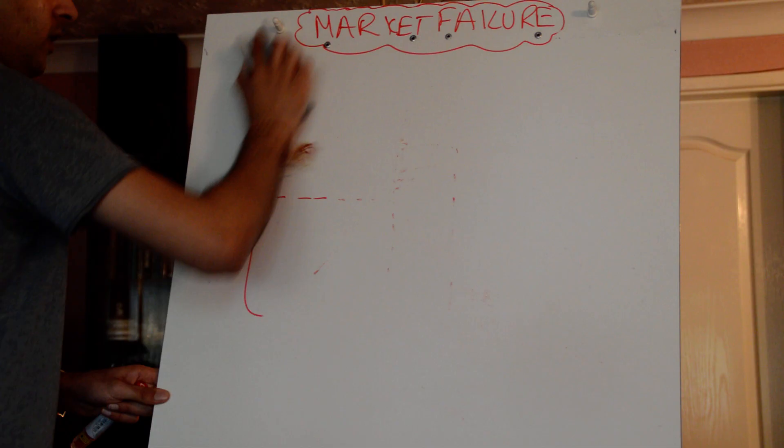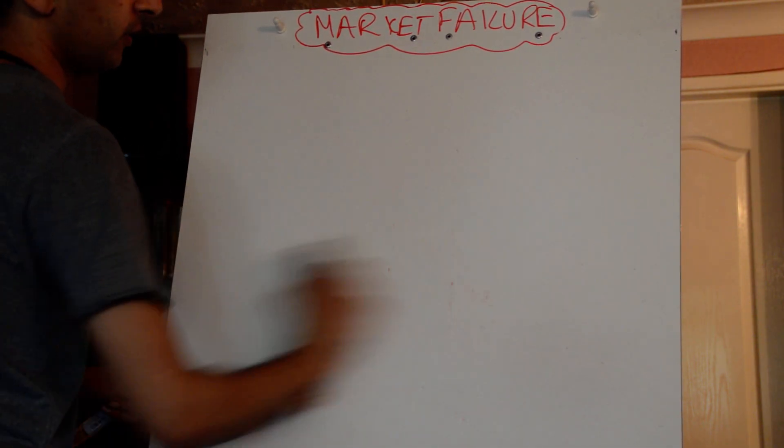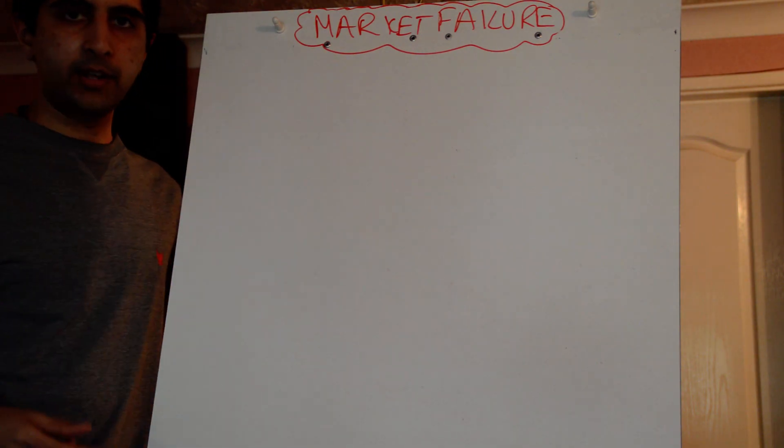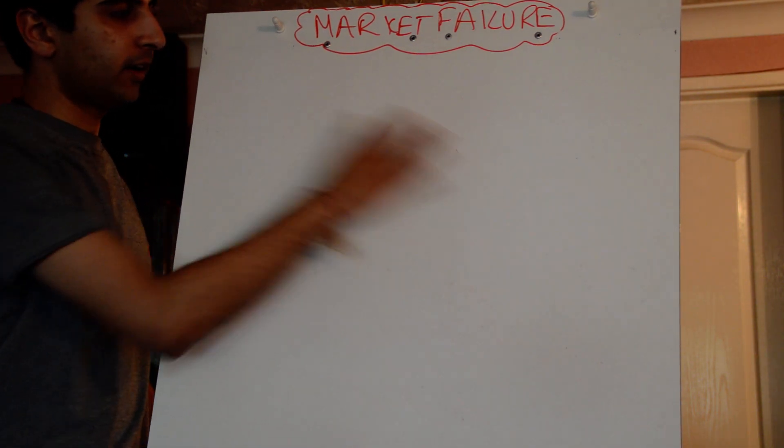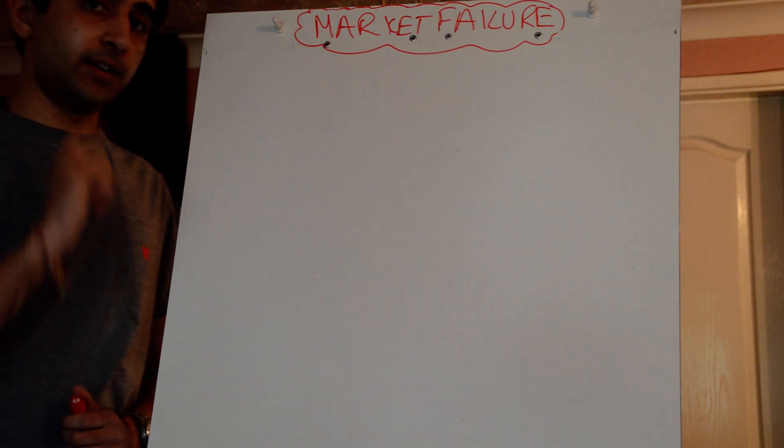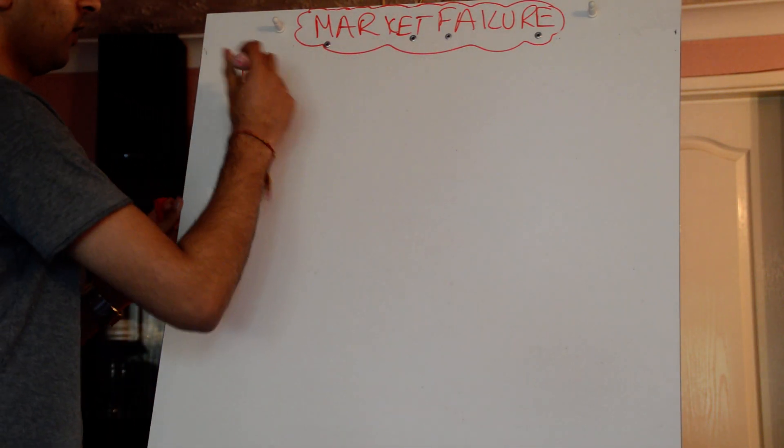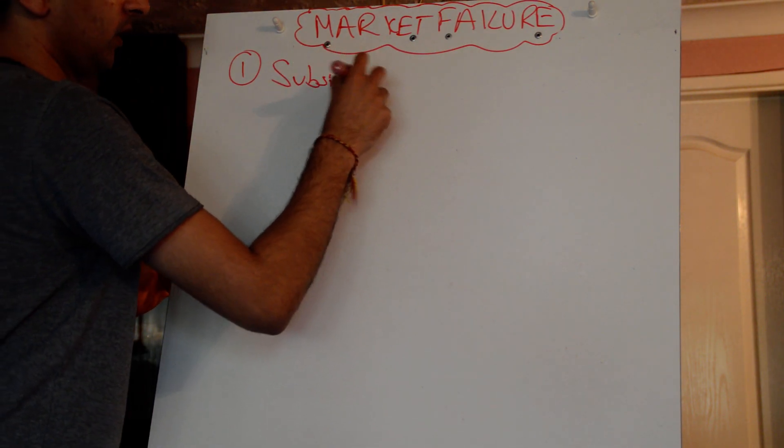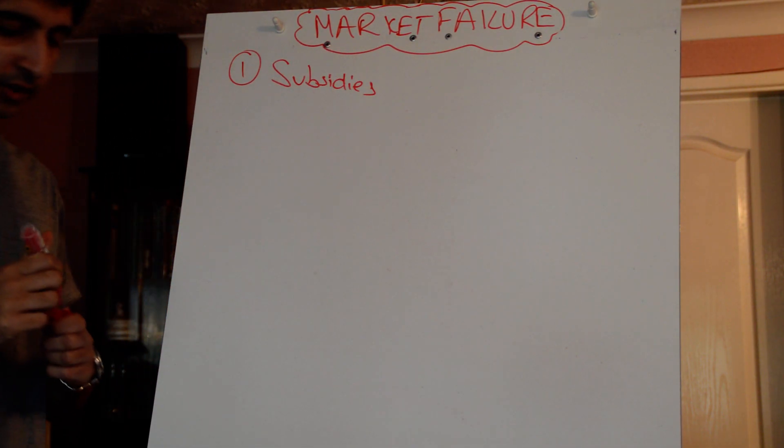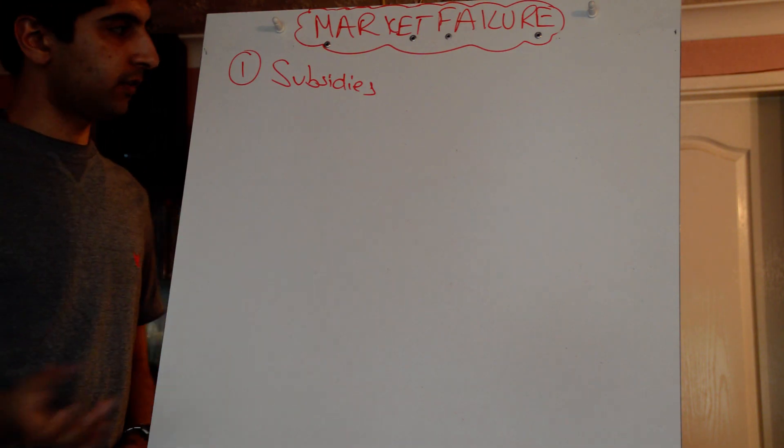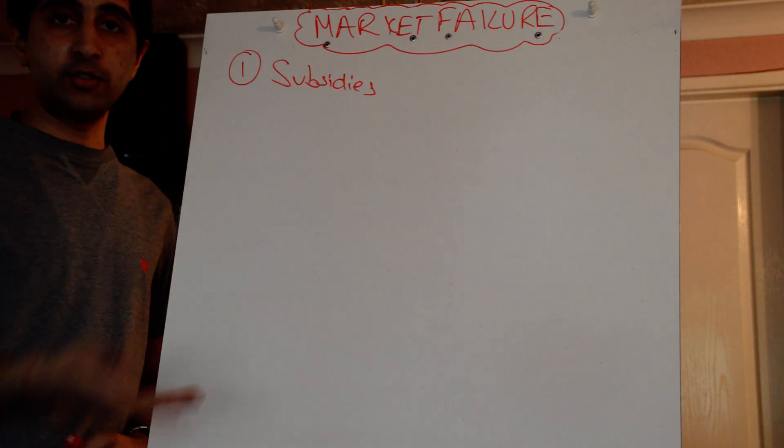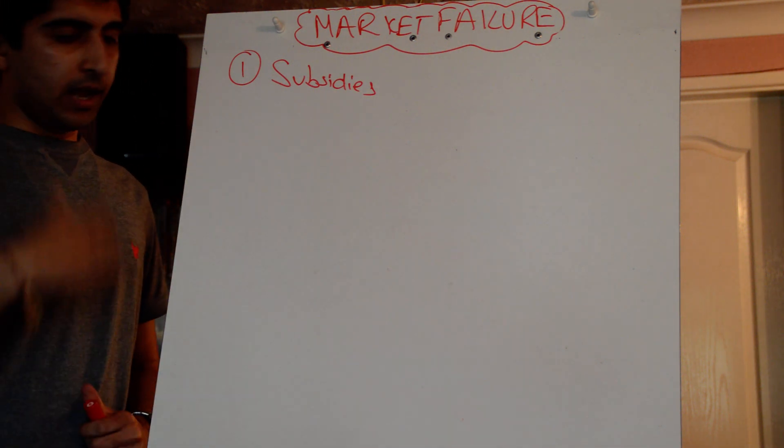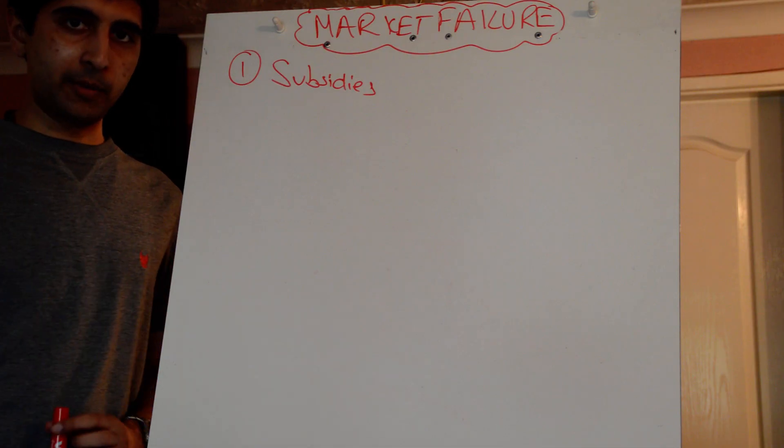Just like with negative externalities and demerit goods and pollution, there's now a rationale for government intervention. If something's happening in the market which isn't desired by society, there's a case for government intervention. What are the ways it can intervene with merit goods? Well, it can offer subsidies to private firms if the private firms are allocating these goods. They can subsidize these firms, reduce their costs, hopefully passing on the lower prices to consumers and increasing output levels closer to the socially optimum level.